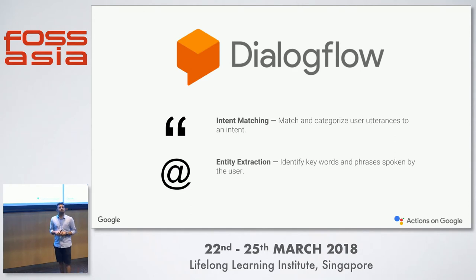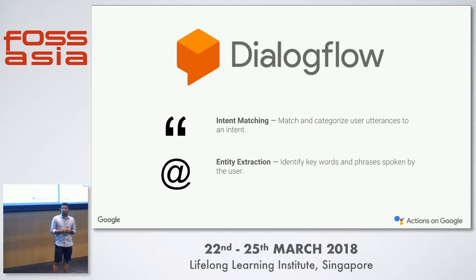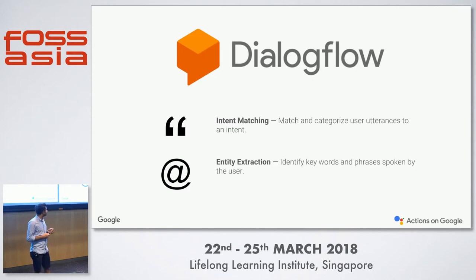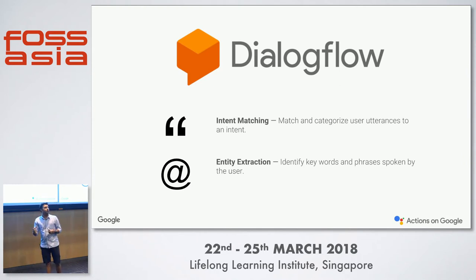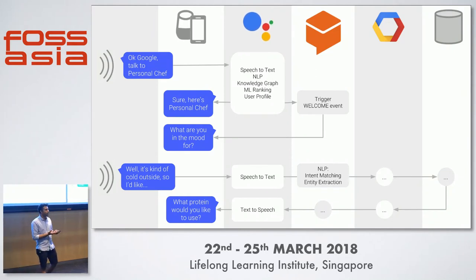API.AI is a company that Google acquired roughly 15 to 20 months ago, and just three to five months back the name changed to Dialogflow. Dialogflow does two things very well. First is intent matching — when the user says something, you identify what action they are trying to perform. Second is entity extraction — identifying items like 'tomatoes' and 'chicken' in a sentence and understanding what they represent. Both intent matching and entity extraction are done very well by Dialogflow. With Dialogflow in the picture, you delegate NLP, intent matching, and extraction to Dialogflow, then connect it back to your back end.